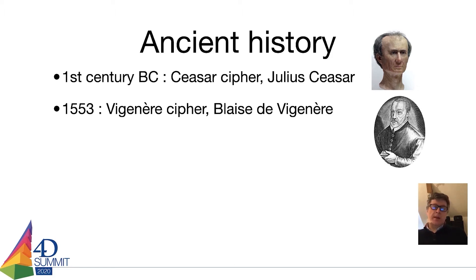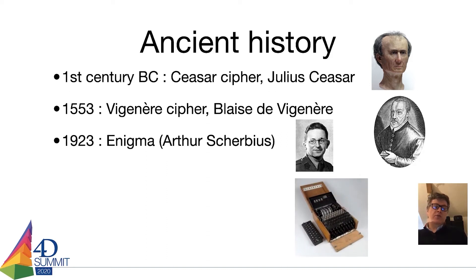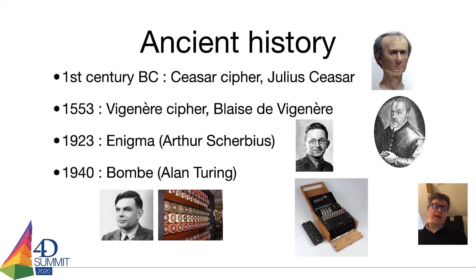In the 16th century, Blaise de Vigenère introduced a new cipher called the Vigenère cipher, which is an extension to the Julius Caesar cipher combining a table and a passphrase. Then in 1923 the Enigma machine was invented in Germany and used by the German army for all its communication. It was a very powerful machine and was in use until the end of the Second World War in 1945.